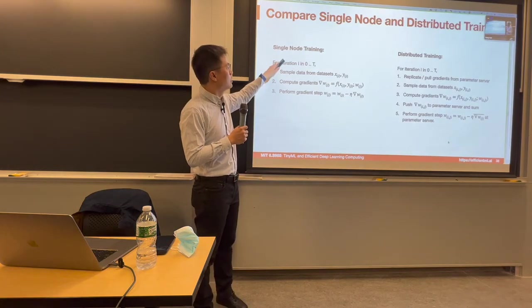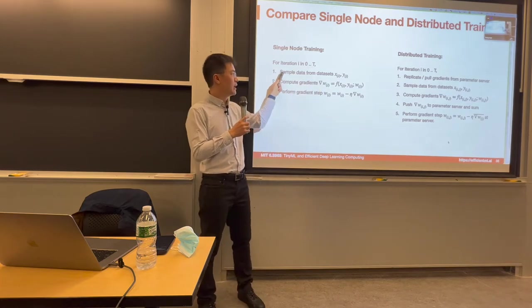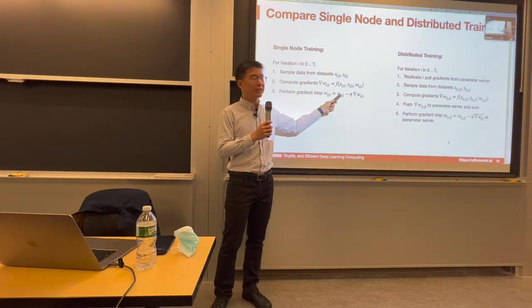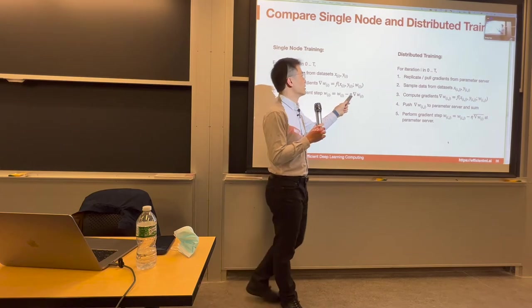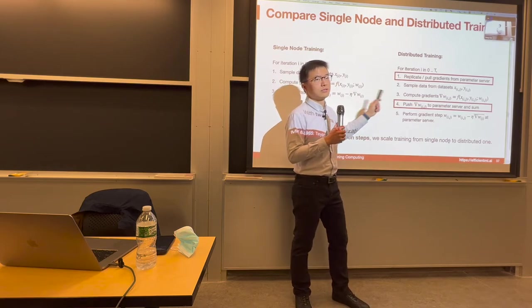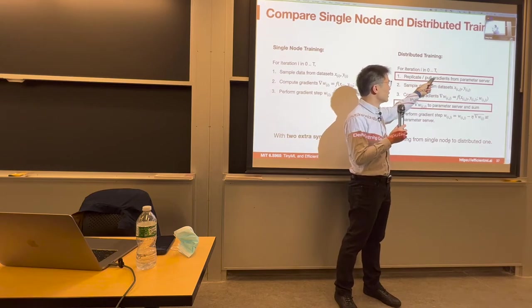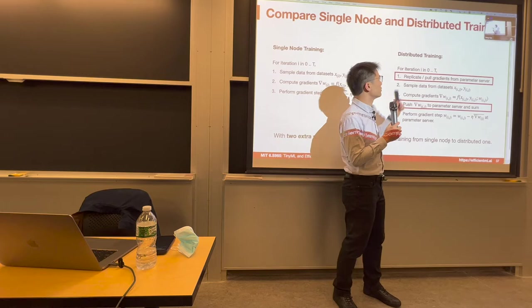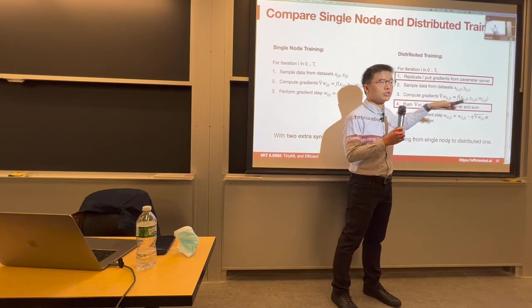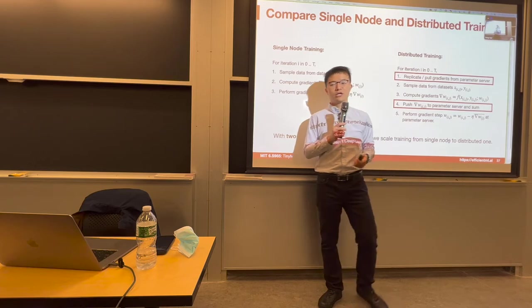Looking at the pseudo-code: for single-node training, we sample a batch, compute gradients, and perform the gradient update W minus learning rate times the gradient. For distributed training, we add two lines — each worker first pulls the weights from the parameter server, computes gradients using its local data, then pushes gradients back to the parameter server.